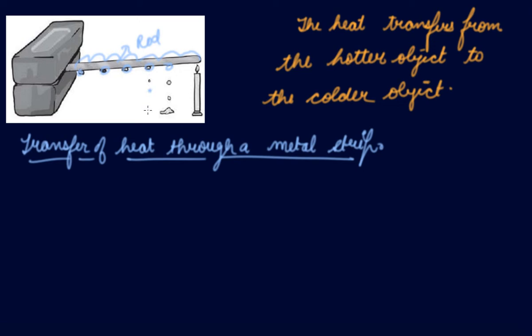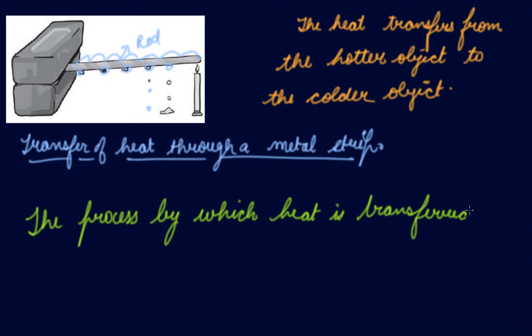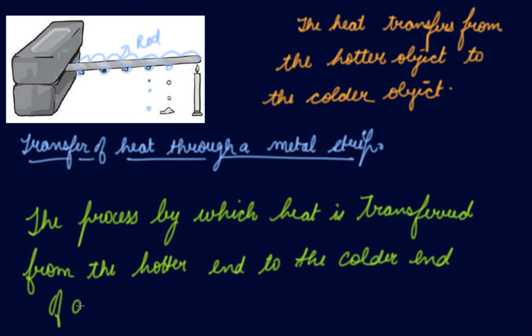and wax starts melting. Now the process by which heat is transferred from the hotter end to the colder end of an object is known as conduction.